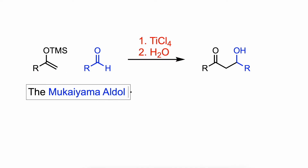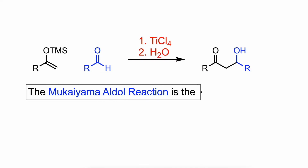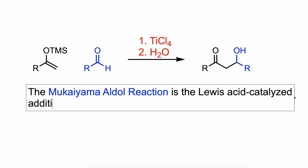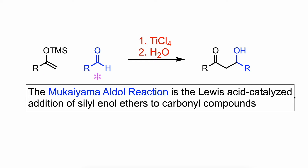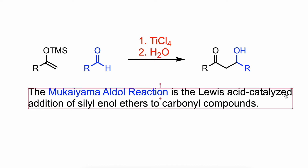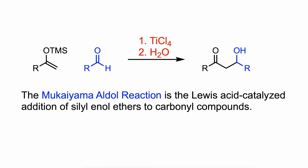The Mukaiyama-Aldol reaction is the Lewis acid catalyzed addition of silyl enol ethers to carbonyl compounds. In the original procedure, stoichiometric quantities of the Lewis acid were employed, but catalytic versions are also available and there is a huge variety of them.